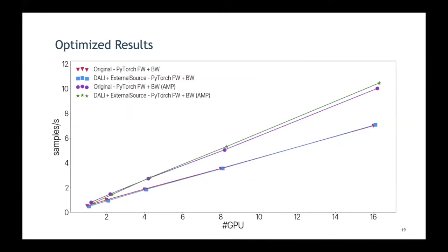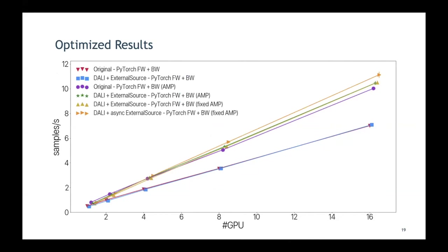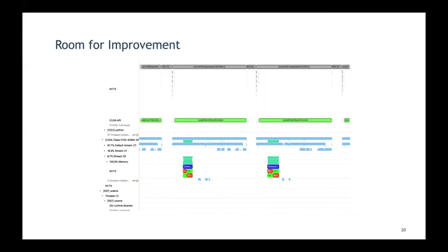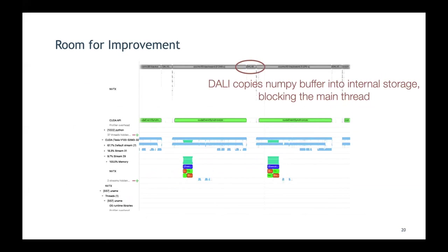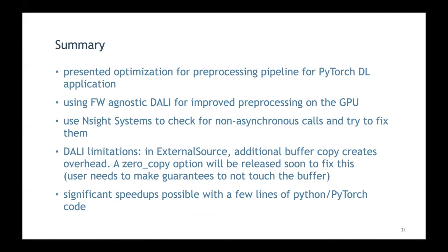With all these fixes, performance is somewhat better than the original. The orange line shows improvement with double-buffering, while the yellow line shows the AMP fix alone. A remaining gap persists because DALI's internal buffer copy of the externally provided data cannot be avoided without modifying DALI itself. A zero-copy option for external source is planned, where the user guarantees the buffer won't be freed for a certain number of steps.